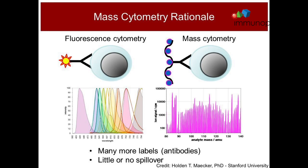So far we can go up to 45 markers, but the machine is set up to get over hundreds of markers. What is the limitation so far is the availability of reagents and the purity of different isotopes that are commercially available on the market.